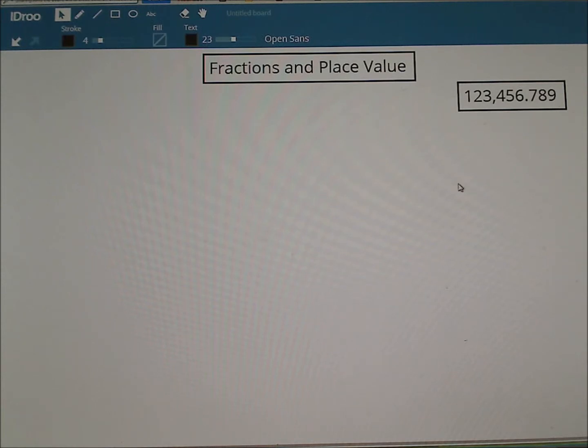The first example we'll do is nine tenths. Looking at the fraction, we first want to consider the denominator. This denominator of 10 lets us know the place value that we'll be using. The numerator gives us the value that needs to be written in that place value.